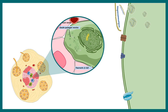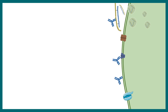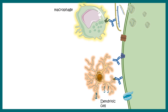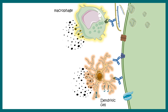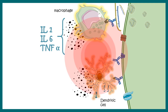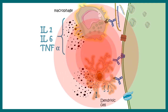The body treats pancreatic beta cells as foreign and generates autoantibodies against them. This generation of autoantibodies can have consequences, as cells like macrophages and dendritic cells recognize these autoantibodies via their Fc receptors. These macrophages and dendritic cells can then secrete inflammatory cytokines such as IL-1, IL-6, and TNF-alpha, leading to attraction of many other cell types and increased inflammation.